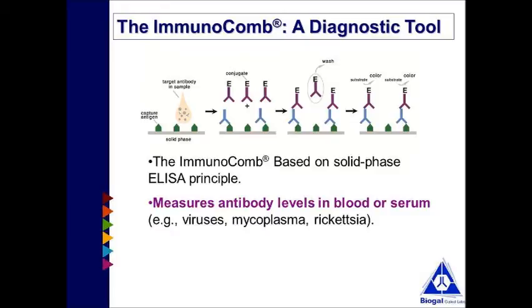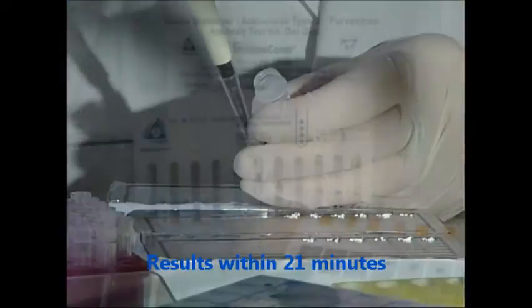So how does the ImmunoComb work? The kit contains all the necessary agents for developing the test. Results for the tests are obtained in most cases within 21 minutes.